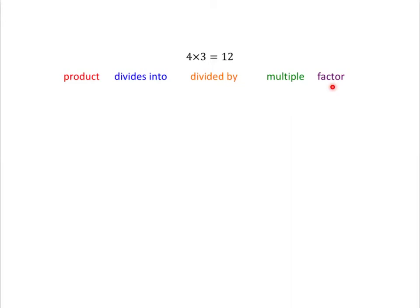What I want you to do is see if you can use each of these words and make a sentence with it, using the fact that 4 times 3 is equal to 12. To show you what I mean, let's use the fact 4 times 3 is equal to 12 and the word product — the sentence I'll make is: 12 is the product of 4 and 3. I want you to pause the video now and write down a sentence for each of these 5 words.